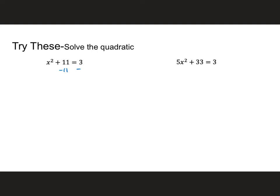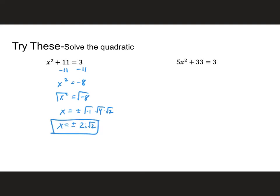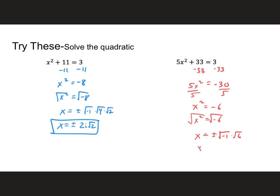x squared plus 11 equals 3: subtract 11 from both sides — 3 minus 11 is negative 8, so x squared equals negative 8. Taking the square root: that's negative 1 times 4 times 2, giving plus or minus 2i√2. For the second problem: subtract 33 from both sides to get 5x squared equals negative 30; divide by 5 to get x squared equals negative 6. Taking the square root gives x equals plus or minus i√6.